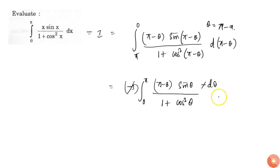Here θ is just a dummy variable, so this becomes 0 to π into π minus x into sin x by